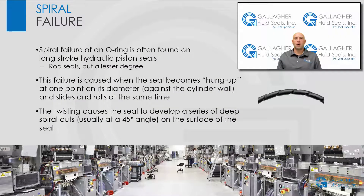Spiral failure of an O-ring is often found on long-stroke hydraulic piston seals and to a lesser degree on rod seals. This type of O-ring failure is caused when the seal becomes hung up at one point on its diameter against the cylinder wall and slides and rolls at the same time. The resultant twisting of the O-ring as the sealed device is cycled finally causes the seal to develop a series of deep spiral cuts, usually at a 45 degree angle on the surface of the seal.